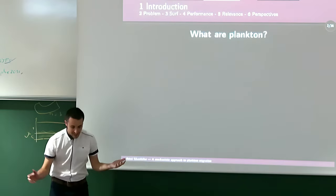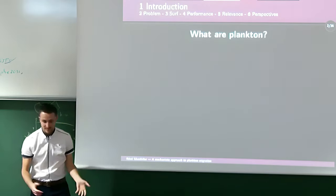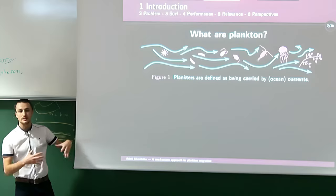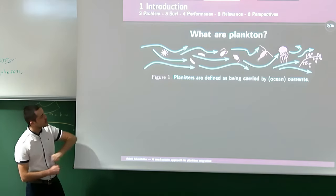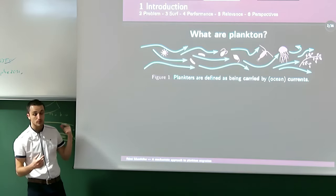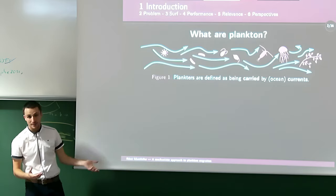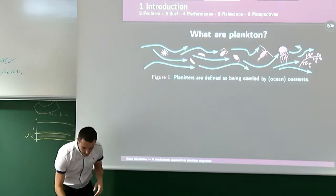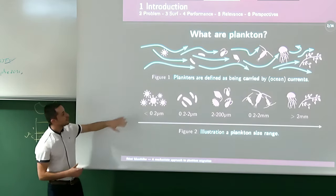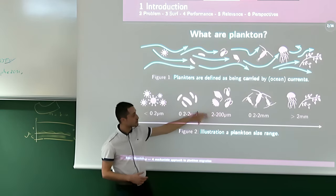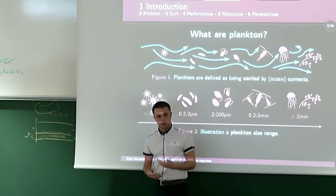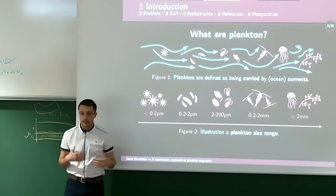Let's talk about plankton. Planktonic organisms are defined simply: they are basically anything carried by ocean currents. One individual in this group is called a plankter — a word I'll use a lot. Because this definition is very broad, it includes viruses, bacteria, single-cell organisms including microalgae, small millimetric animals, larger slow-swimming jellyfishes, or even branches carried by the flow.